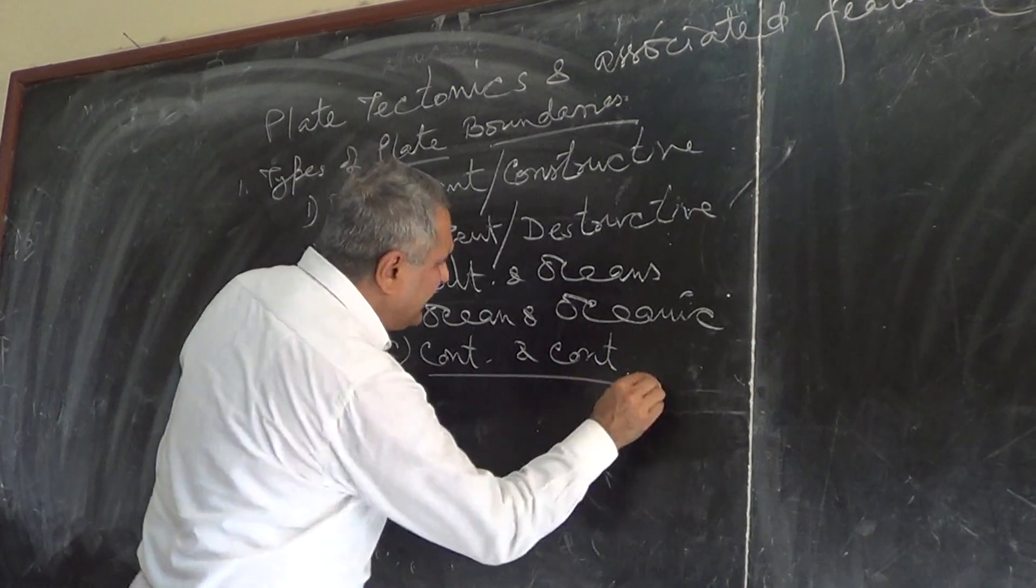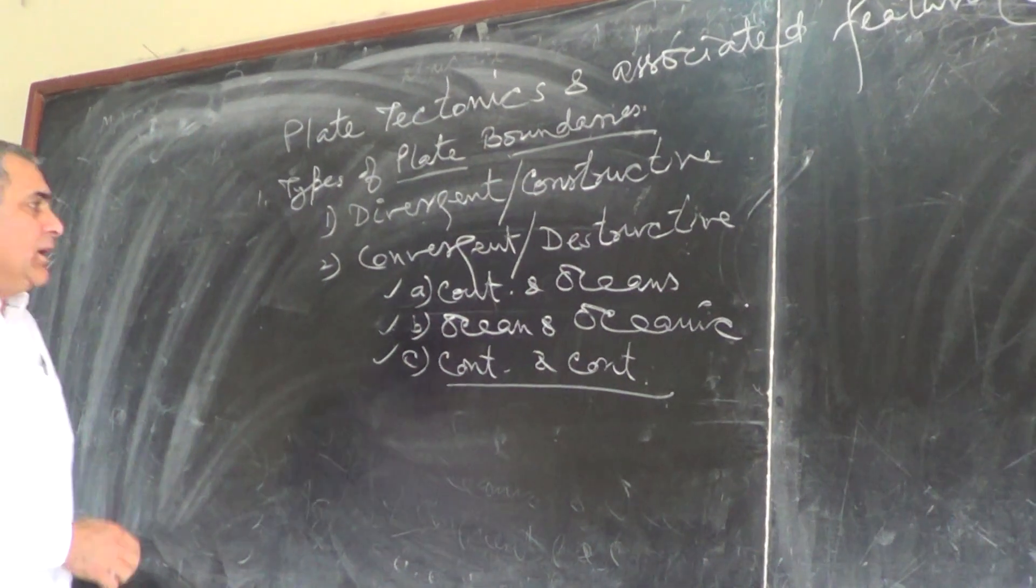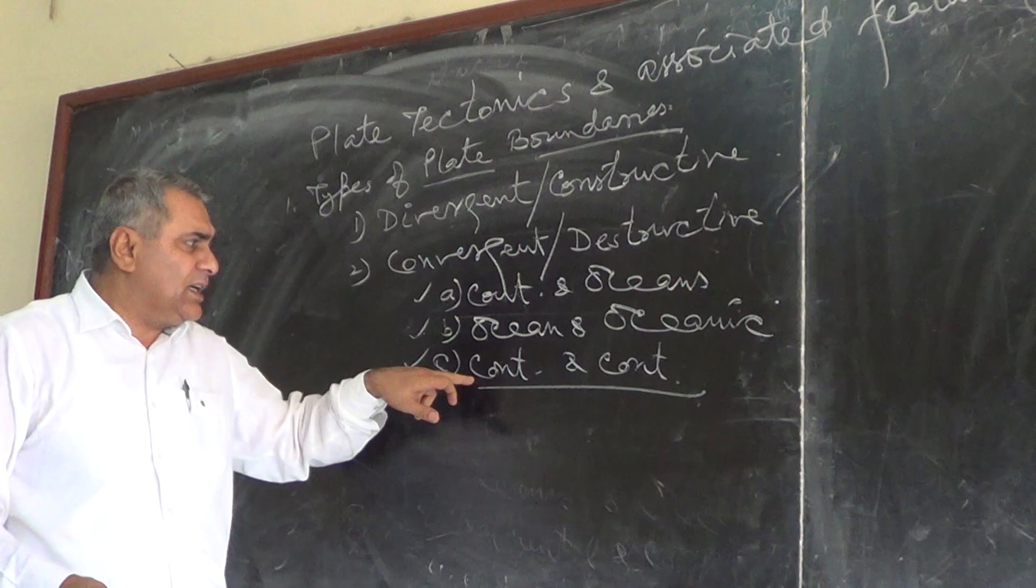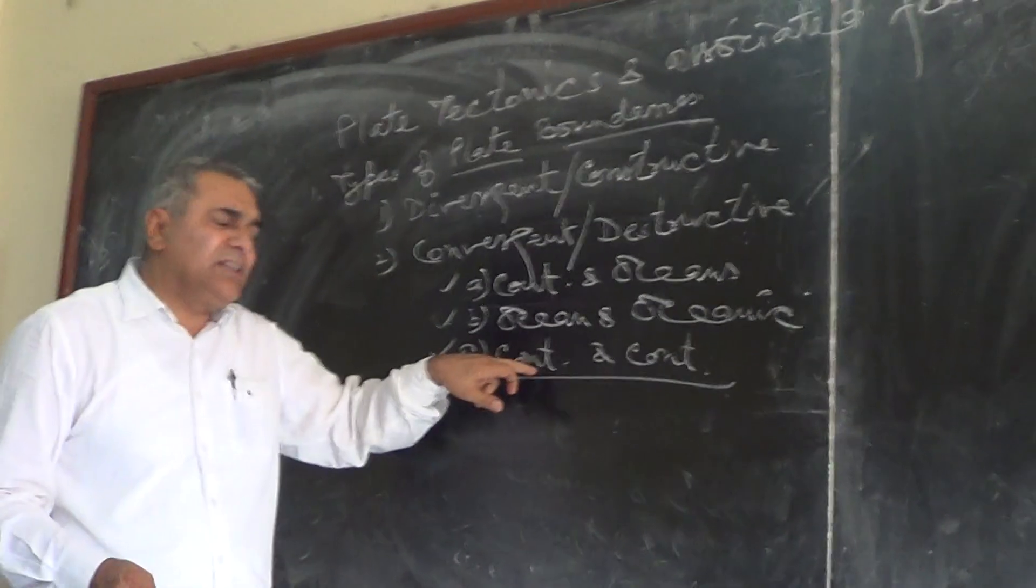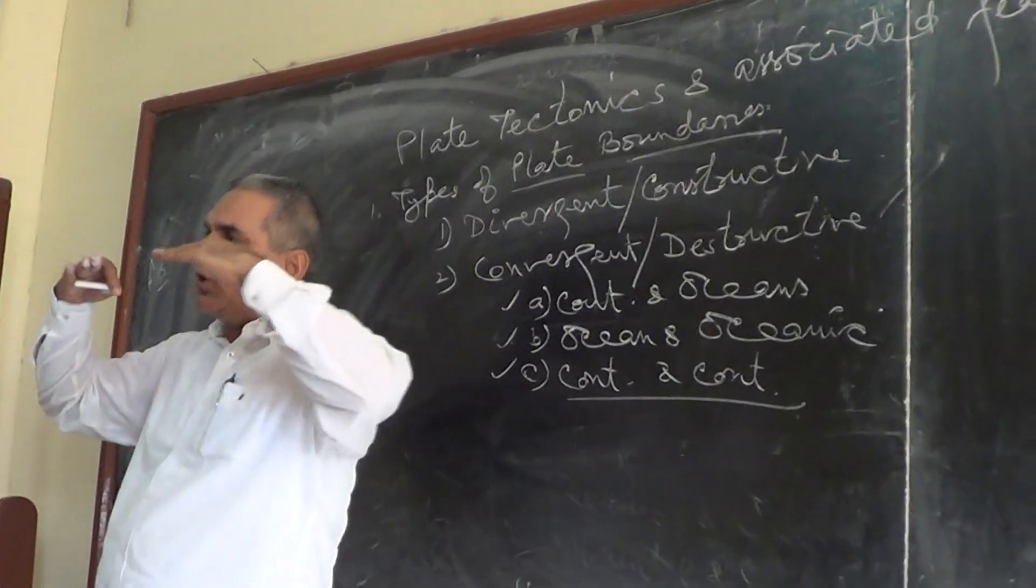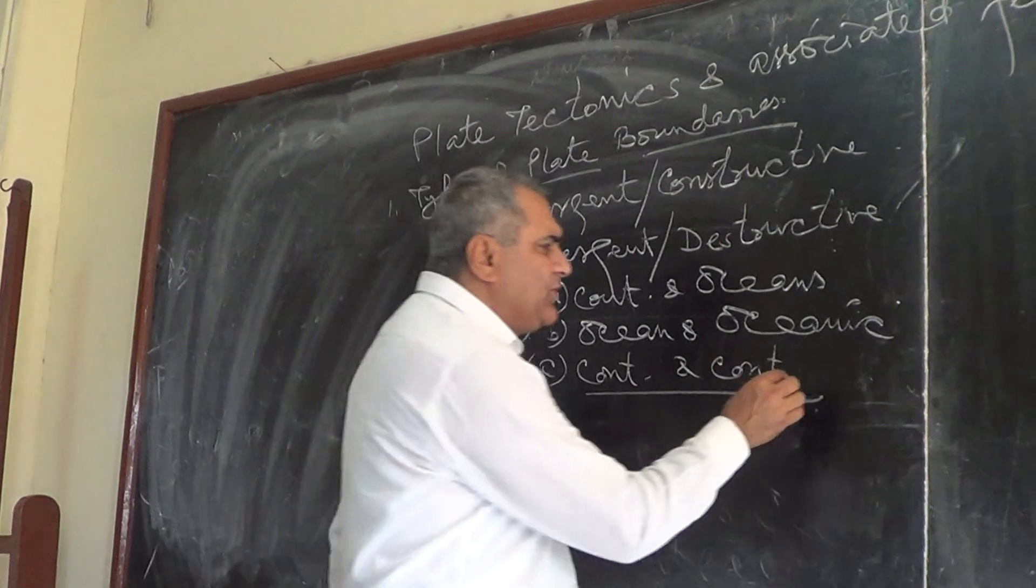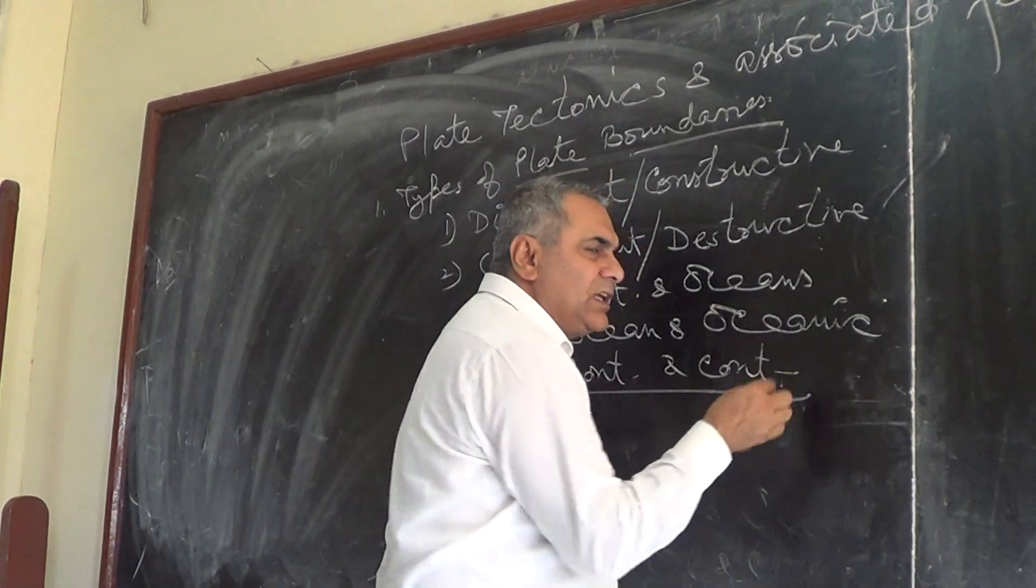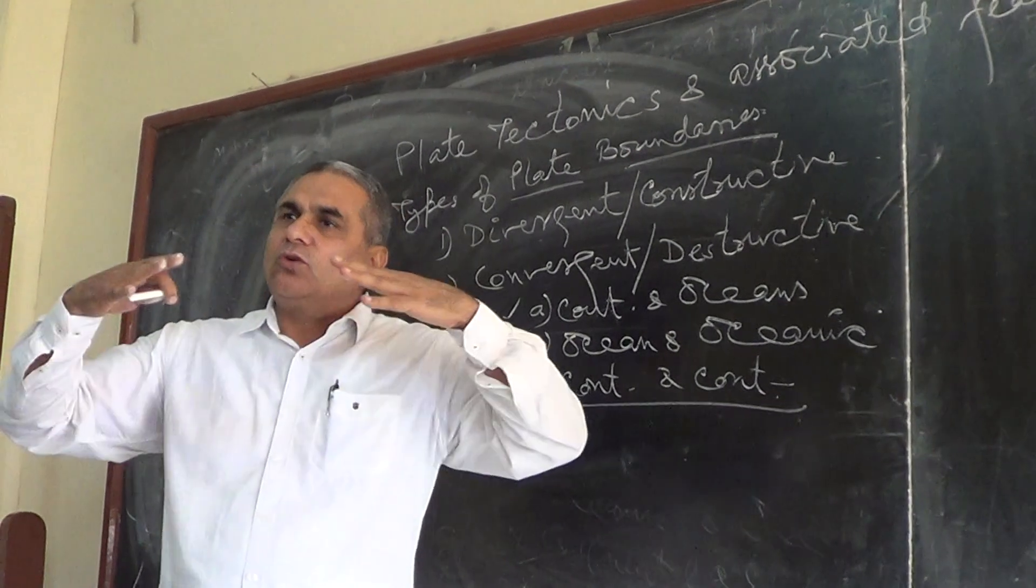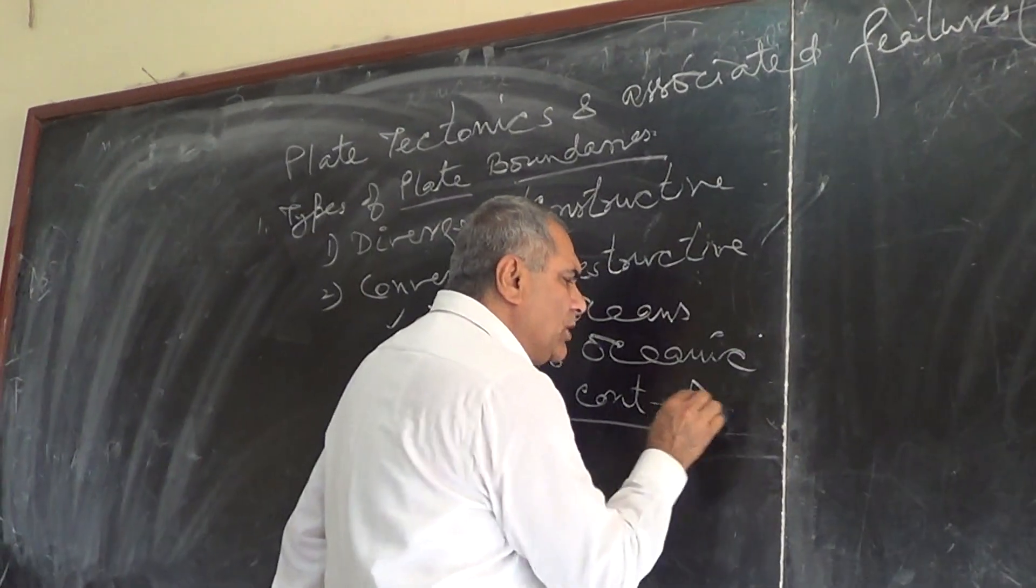I discussed all these three in different conditions. I wanted to give you the different relief features. When continent and continental plates collide together, they form different types of features. What type of features form when the two continental plates collide together? Fold mountains.